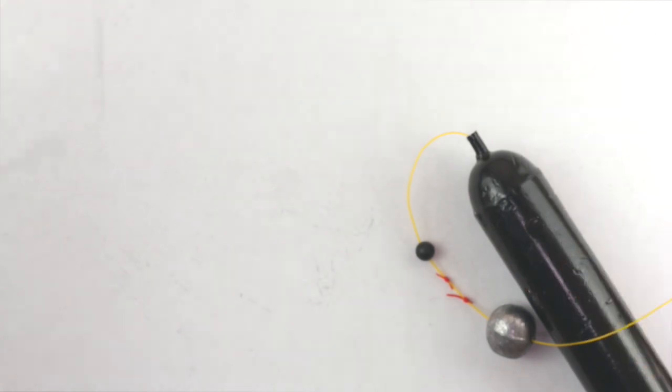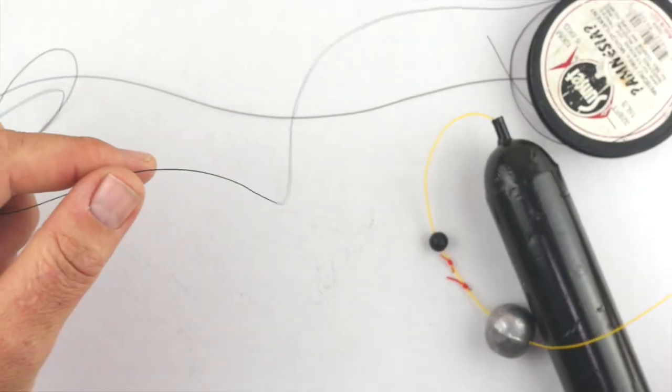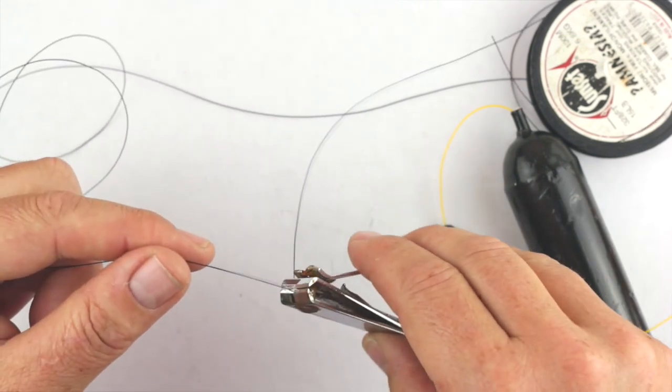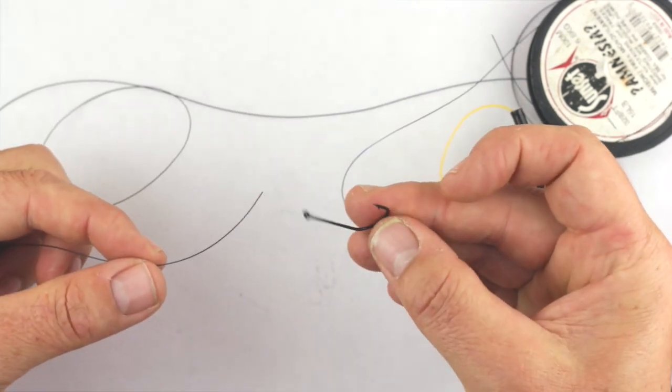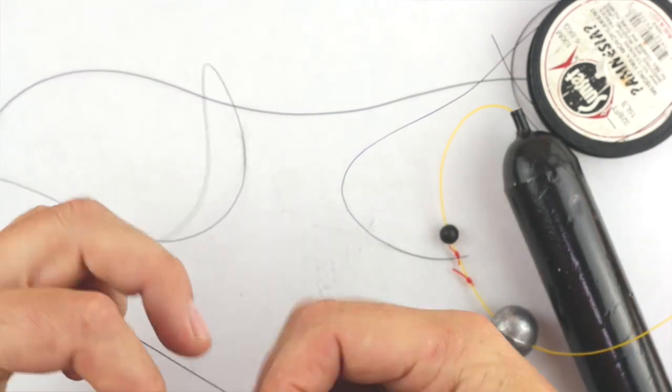Of course, if you have to cast, then you can set your distance with the stop knot, the top stop knot, and that'll be where the float ends up. So you can drag everything down to the bottom of the rig, and then cast, and then the float will find its way up to the stop on the main line.